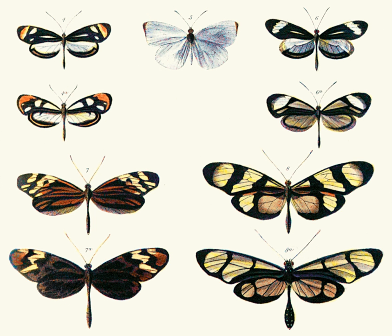Reproductive mimicry occurs when the actions of the dupe directly aid in the mimic's reproduction. This is common in plants with deceptive flowers that do not provide the reward they seem to offer. It may also occur in Papua New Guinea fireflies, in which the signal of Pteroptyx effulgens is used by P. tarsalis to form aggregations to attract females. Other forms of mimicry have a reproductive component, such as Vavilovian mimicry involving seeds, vocal mimicry in birds, and aggressive and Batesian mimicry in brood-parasite host systems.